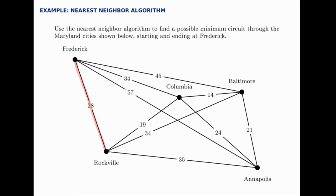From Rockville we pick the shortest distance we can, other than the one we've already used going up to Frederick. The 19 miles to Columbia is the shortest one here.